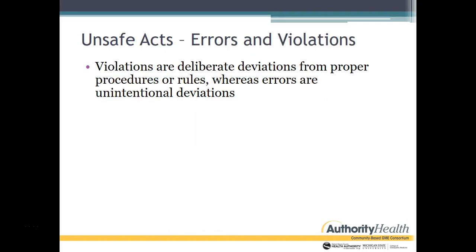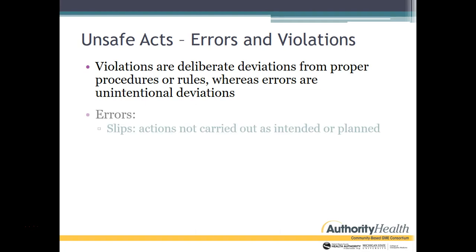Let's talk about unsafe acts — errors versus violations. Violations are deliberate deviations from proper procedure or rules, whereas errors are unintentional deviations. If someone commits a violation, they purposefully did something out of line with the standard, normal, acceptable process. With errors, something happened but it wasn't an intentional deviation.